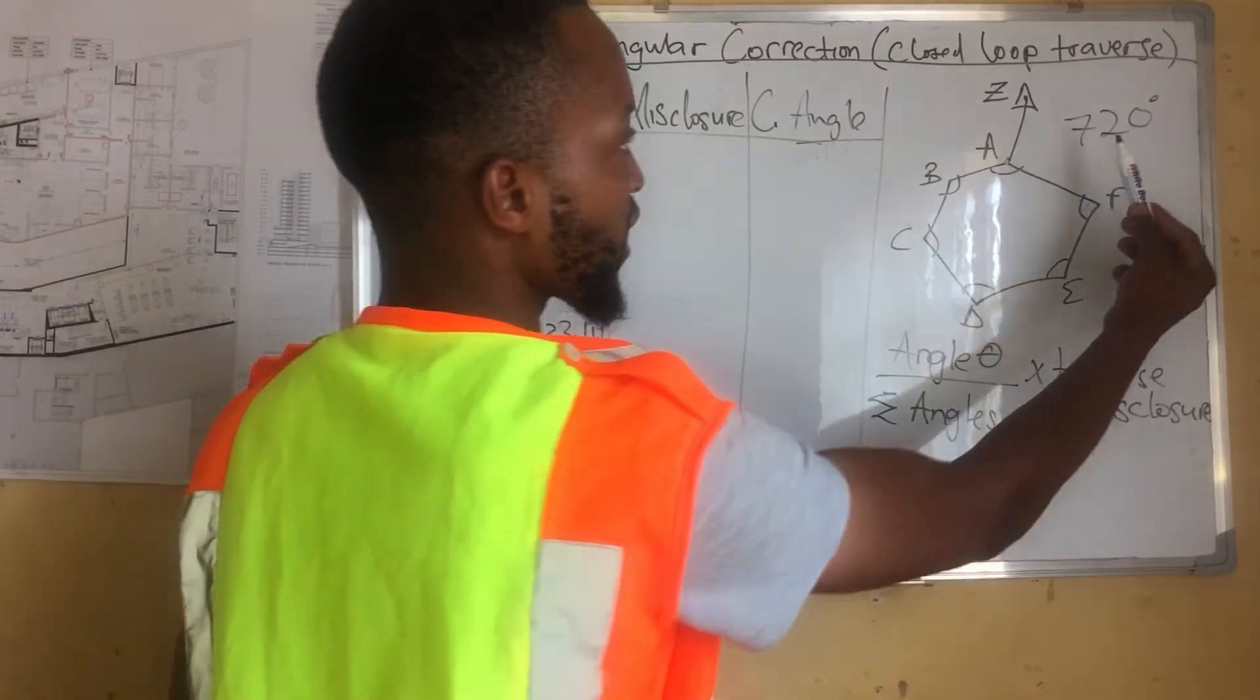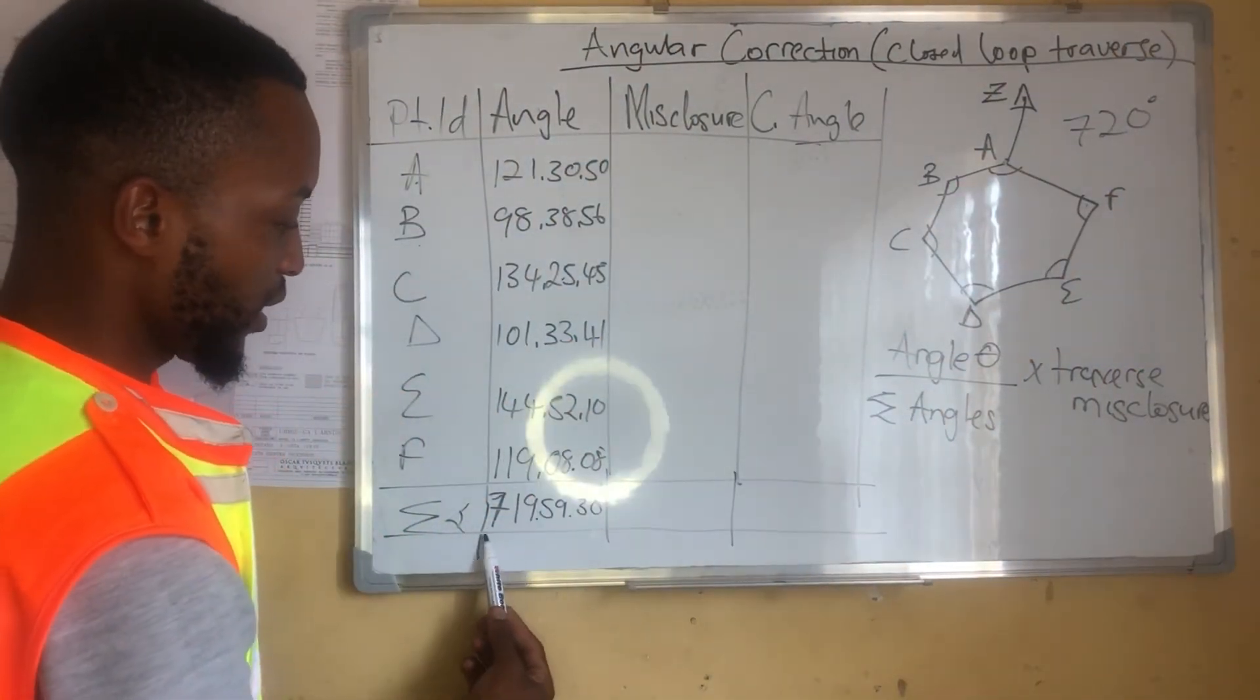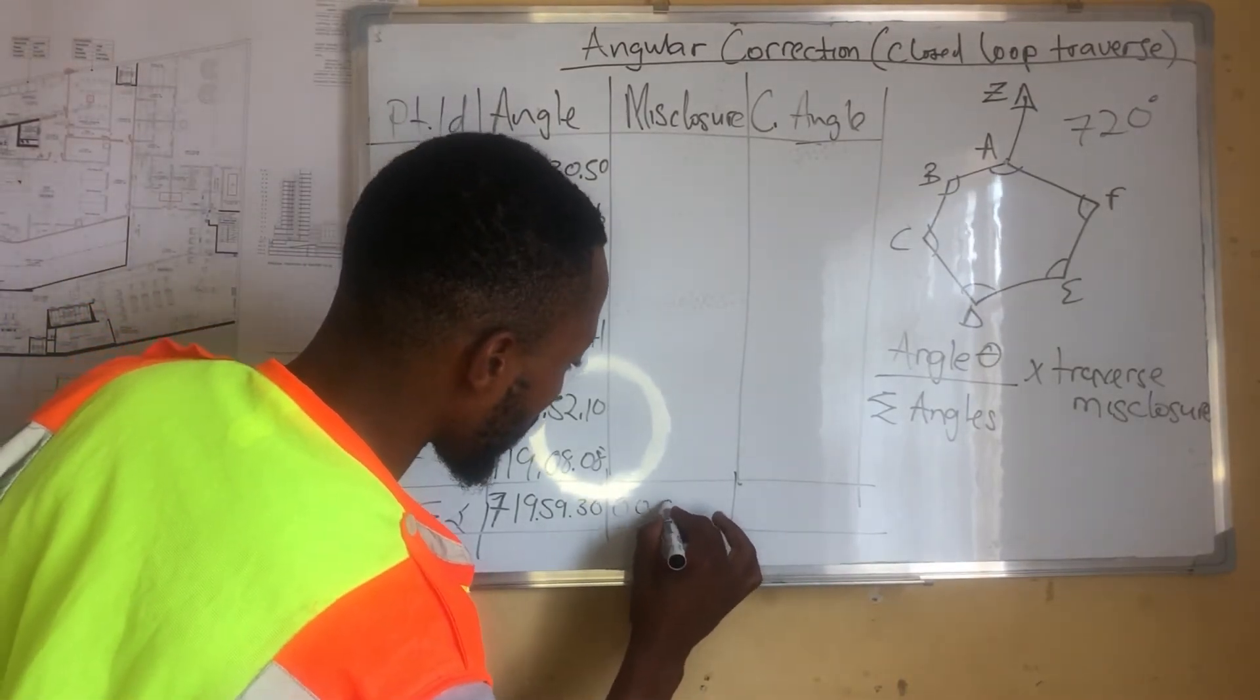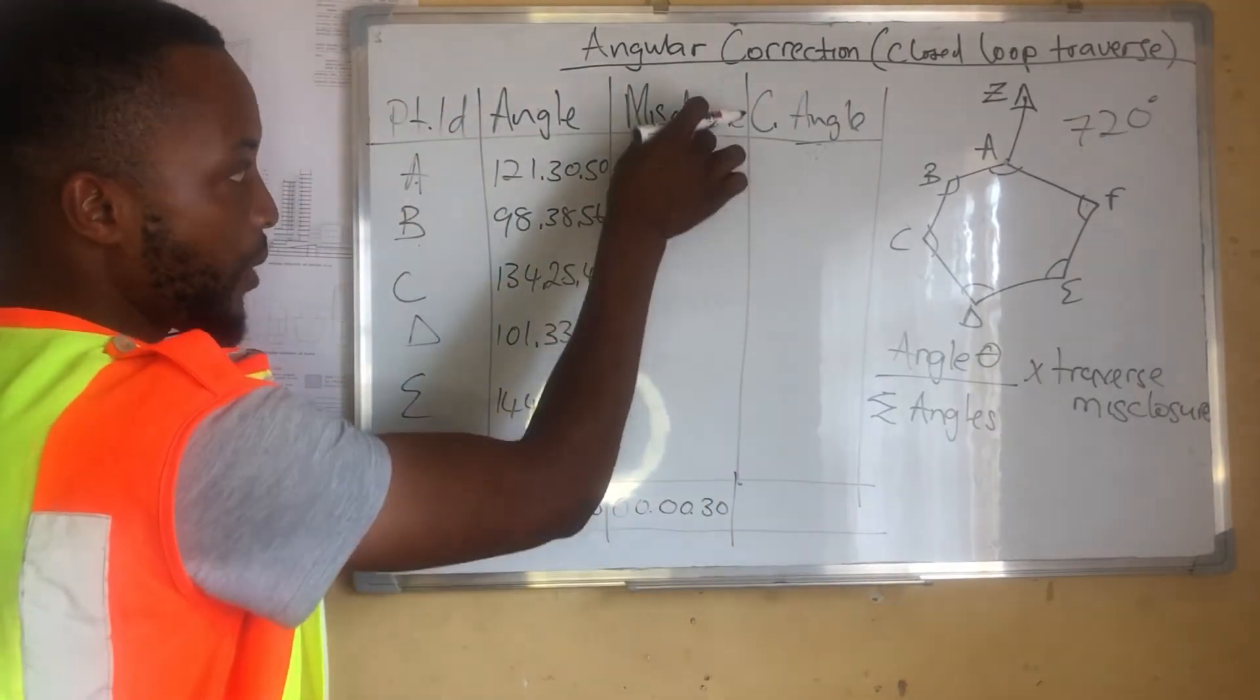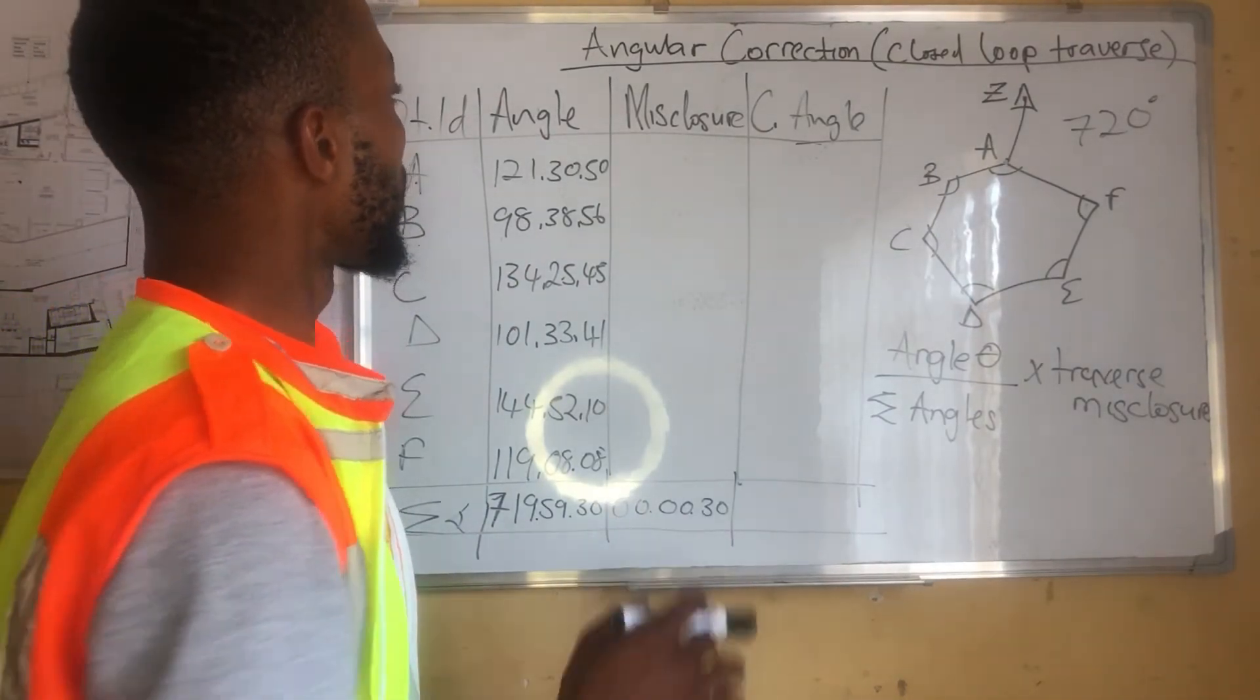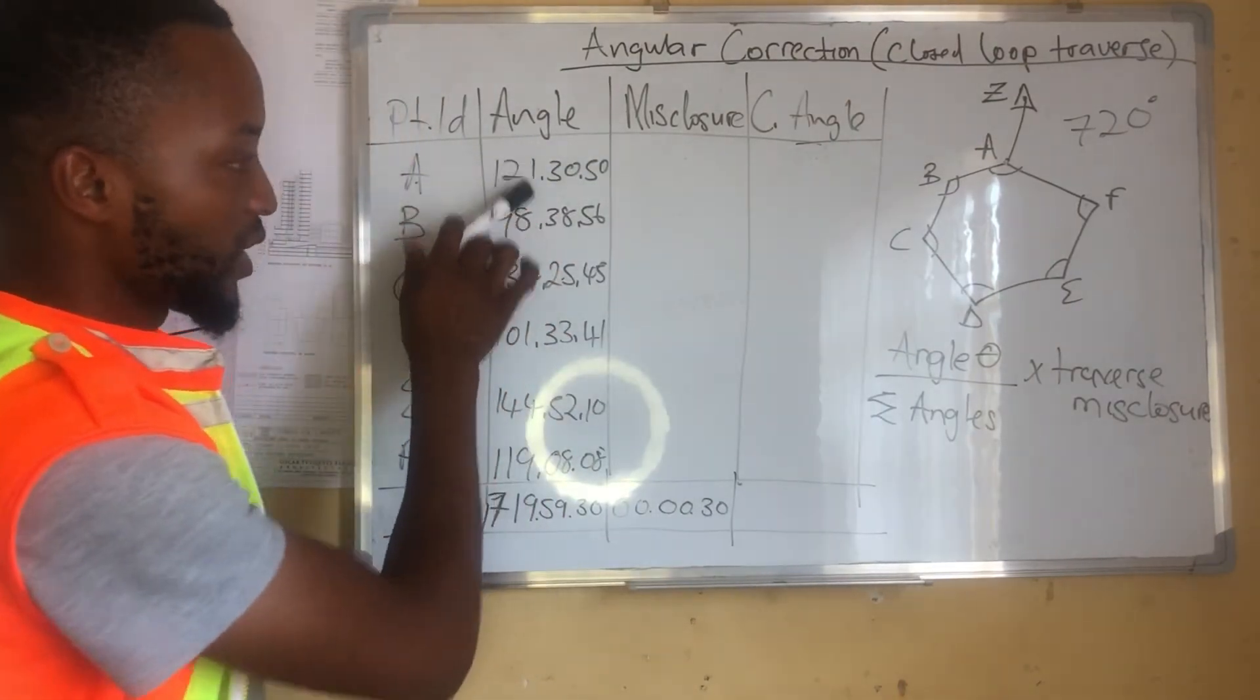What do we do? Our traverse misclosure, like I said, if we say 720 degrees subtract our sum of angles, we'll get 30 seconds. This is going to be the sum of our misclosure, here. We are going to share